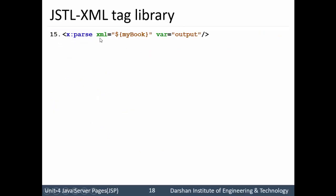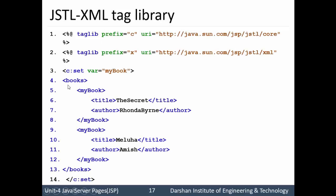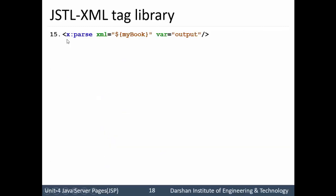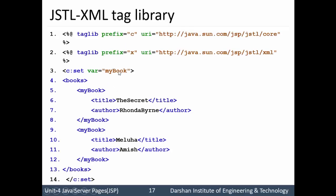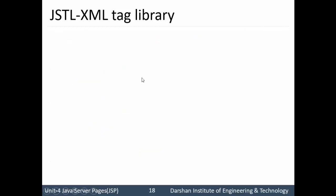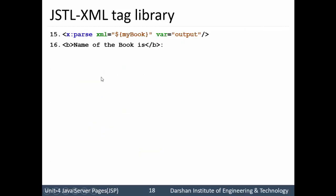Next, x:parse — I want to parse this program. Here I have written XML tag books, and within that there are two XML tags of my book, each containing title and author name. Lines 4 to 13 form the XML tag document. We are going to parse this XML document using x:parse with XML type document referencing dollar my book. This is the variable my book set in c:set, and the name of the parsed variable is output. I need to parse the name of the book — book number 1 is The Secret and book number 2 is Meluha — on the basis of its numbering.